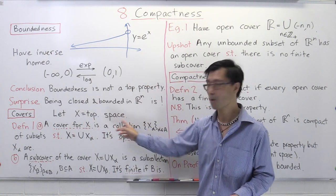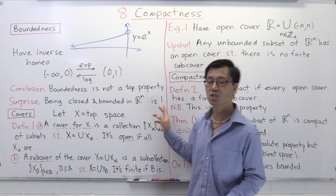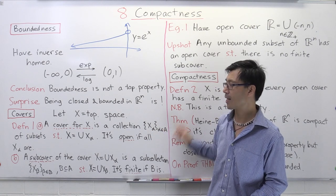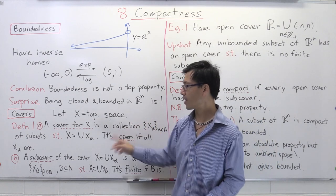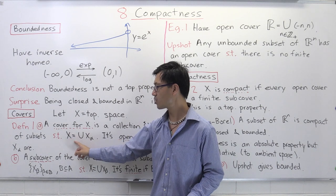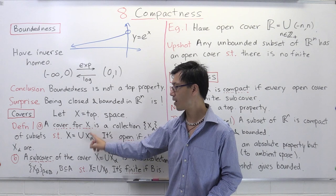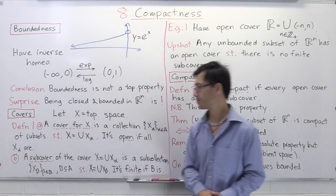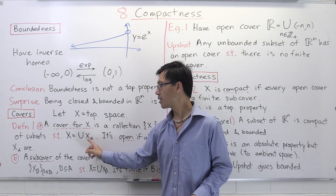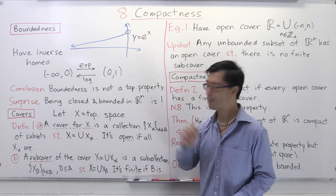Let X stand for a topological space. A cover for X is a collection of subsets X_alpha, where alpha ranges through some index set A, such that the union of this collection is the whole of X. So we're expressing X as a union of subsets X_alpha, and this collection forms a cover for X. If all these X_alphas happen to be open subsets of X, then we call that an open cover.